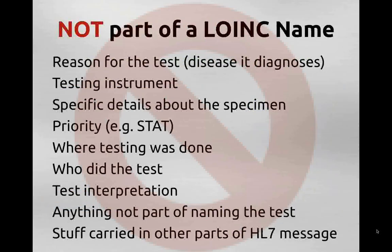It's also important to consider things that are not part of the LOINC name. None of these will show up in a formal LOINC name: the reason for the test, the testing instrument, specific details about the specimen and how it was collected, whether this was stat or not, where the testing was done, or who did it. Essentially, anything not essential for identifying the test is not part of the LOINC name. Things that have other designated fields in the HL7 message — such as specimen and reason for test — do not show up in the LOINC name, not because they're unimportant, but because there are other ways to communicate that information.